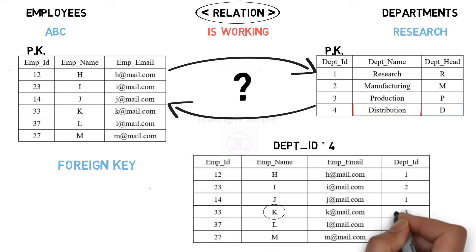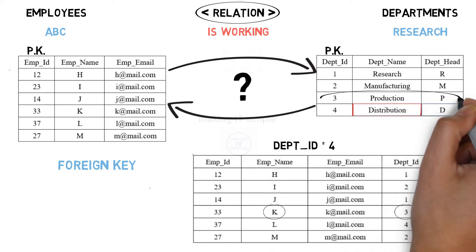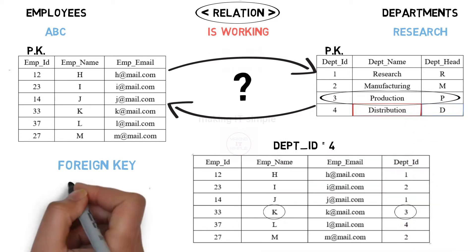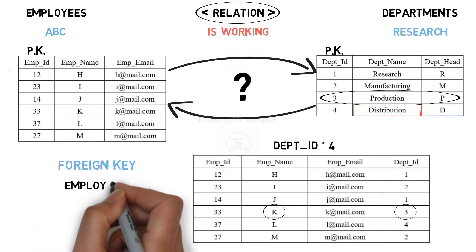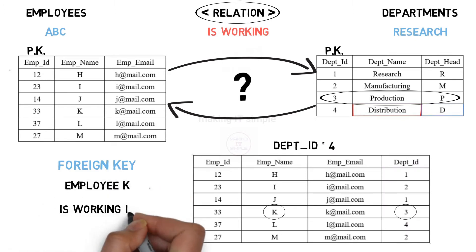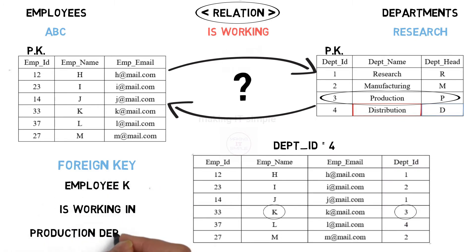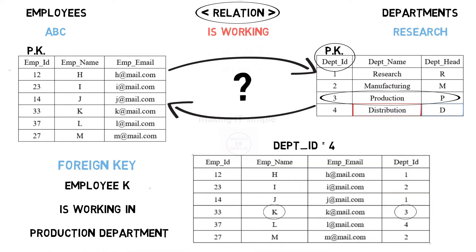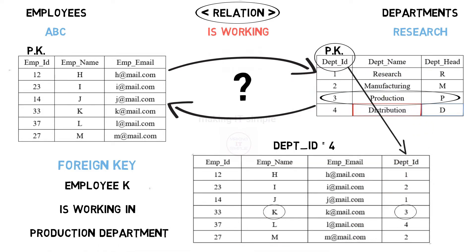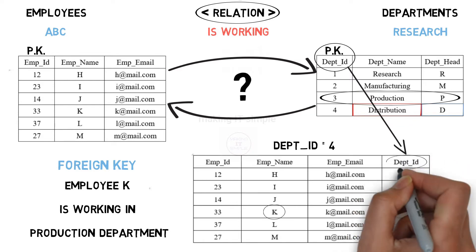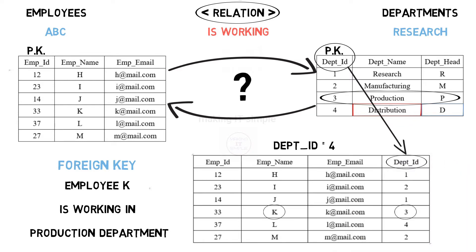For example, employee K has department ID 3. Department ID 3 belongs to production department. So in simple words, employee K is working in production department. Now for referencing the relation, we used one table's primary key attribute in another table. This attribute is called a foreign key, which is used to specify relation among tables.